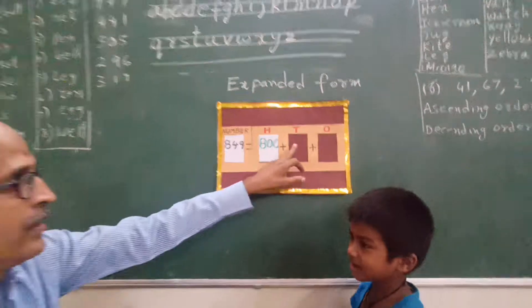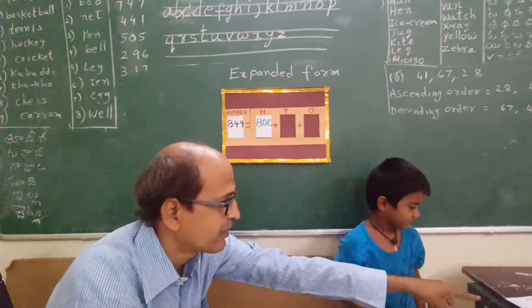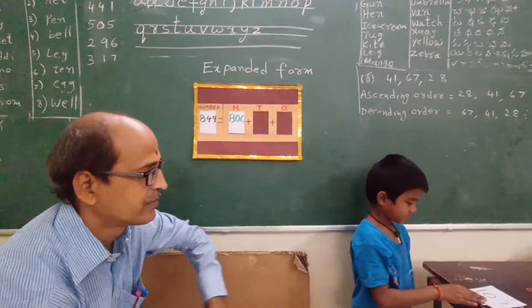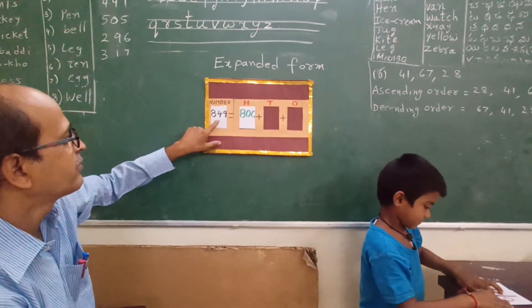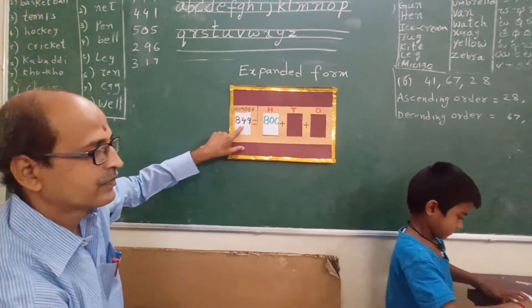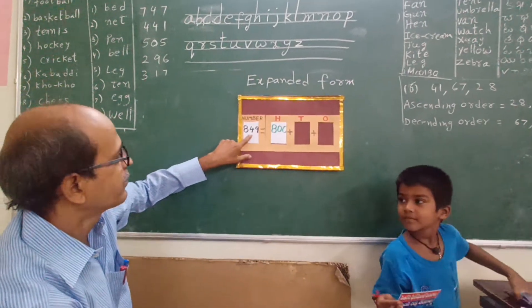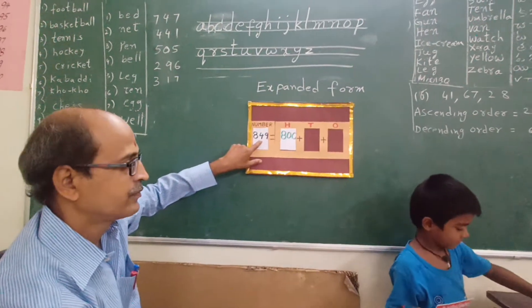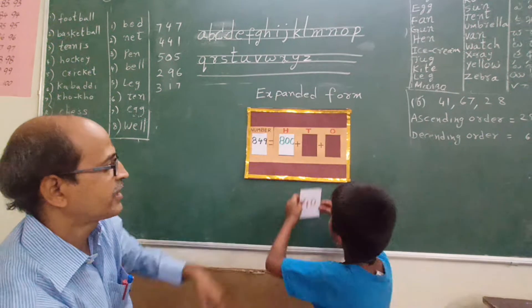Now, tens place. We have to select from that card. Select the relevant card from that. What is this number? 5. Okay. Insert the card.